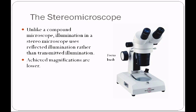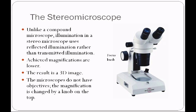The magnifications from a stereomicroscope will be lower than from a compound microscope — about 45x on these. The result is a three-dimensional image. The microscopes don't have objectives; magnification is changed by a knob on the top. There's also a focus knob on the side. There are two light settings: incident light that comes down from the top and bounces off the specimen, and light that comes through the bottom.